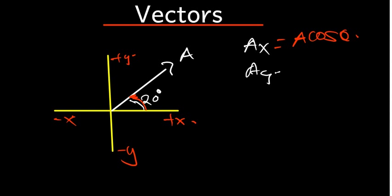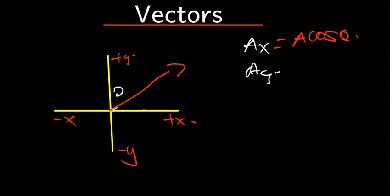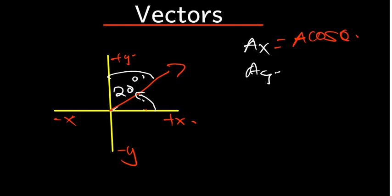Now let's say we have a vector where the angle is given near the y-axis — 20 degrees. To resolve this vector, remember we get the angle from positive x until it touches the vector. From positive x to the positive y-axis is 90. So instead of using 20 directly, it's going to be 90 minus 20, which is 70 degrees. So the angle we are going to use is 70 degrees.